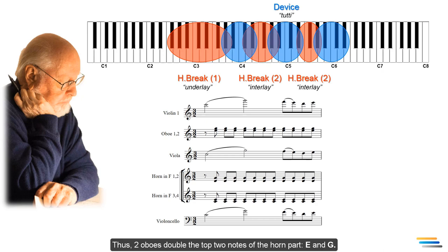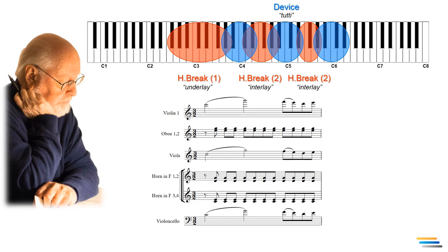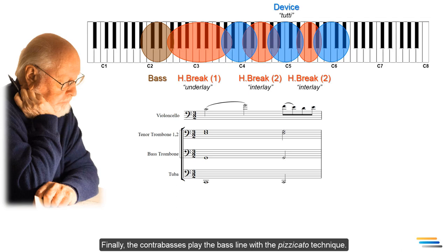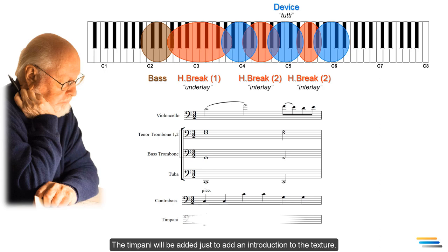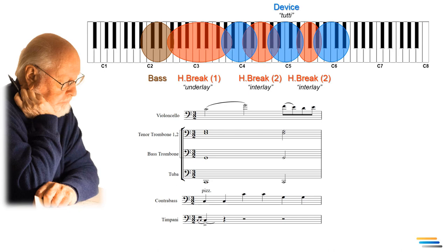Thus, two oboes double the top two notes of the horn part, E and G. Finally, the contrabasses play the bass line with the pizzicato technique. The timpani will be added just to add an introduction to the texture.